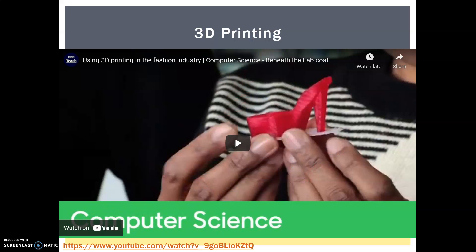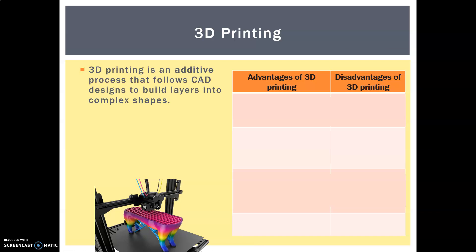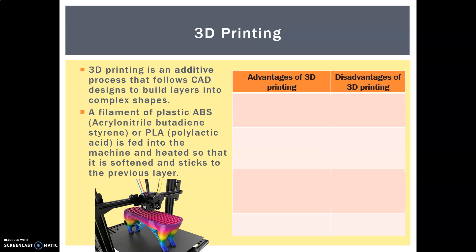Next is 3D printing. It's known as an additive process — literally the addition of something. This additive process follows a CAD design and builds up layers to create complex shapes. A filament — a long string of plastic, ABS or PLA — is fed into the machine and heated at the nozzle end, where it becomes soft and sticks to the previous layer. It's almost always a grid or open matrix structure rather than solid, so it's really strong but lightweight and doesn't use too much material.